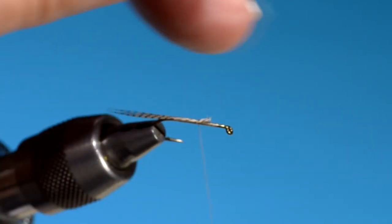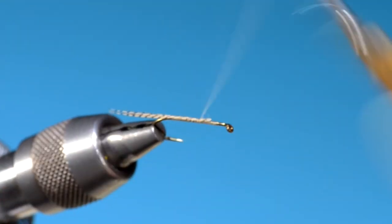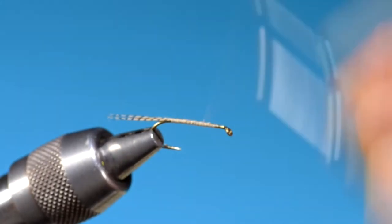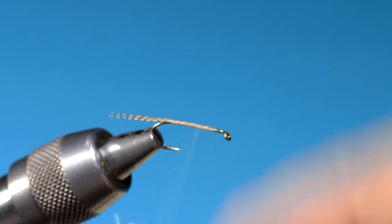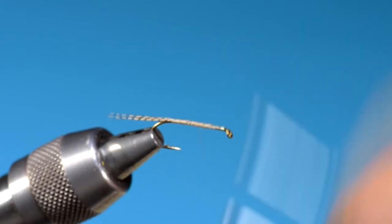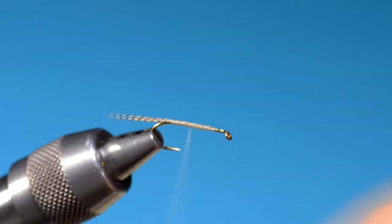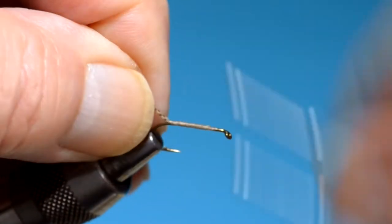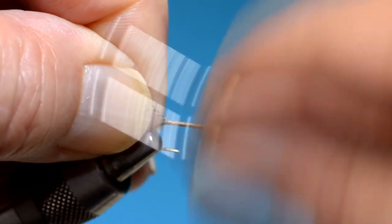We don't have to worry about building a body with this fly, as the body is made from fur. Red fox fur, in this case, a little bit of the under fur.